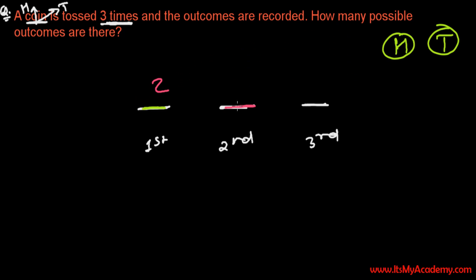And when you toss second time, what are the possibilities? You may get head again, you may get tail again. So there are two possibilities.